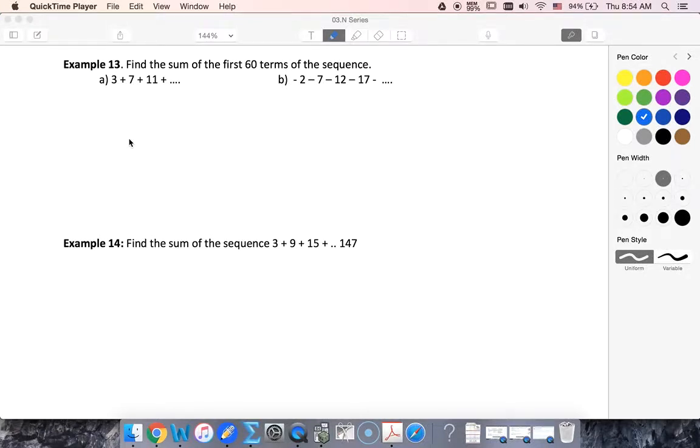In these cases I'm asked to find the sum of the first 60 terms of the sequence. So my n is going to be equal to 60. Technically we probably should have said series here because we've got our sum or our difference.